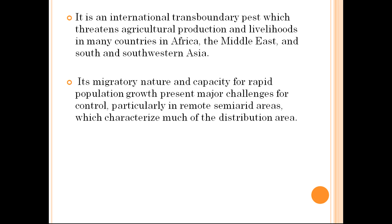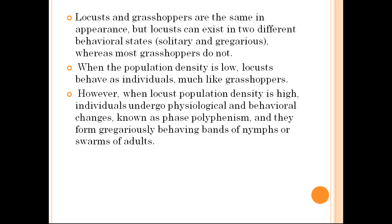Even a very small one-square-kilometer locust swarm can eat the same amount of food in one day as about 35,000 people — that is why these locusts are very devastating. It's an international transboundary pest which threatens agricultural production and livelihoods in many countries in Africa, the Middle East, and South and Southwestern Asia. Locusts and grasshoppers look the same, but locusts can exist in two different behavioral states: solitary and gregarious, whereas most grasshoppers do not.